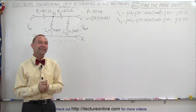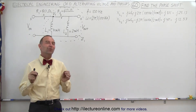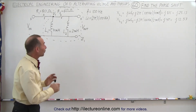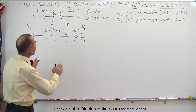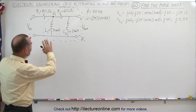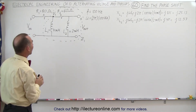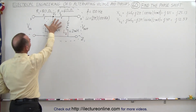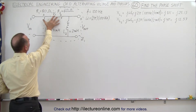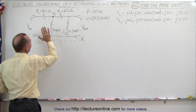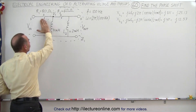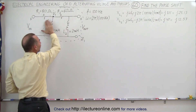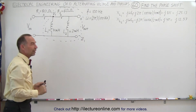Welcome to ElectronLine. Here we can now try out what we've learned so far. We're going to try to find the phase shift of this circuit right here. We have two inductors and two resistors — it's basically two shifters in series with one another.